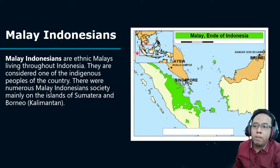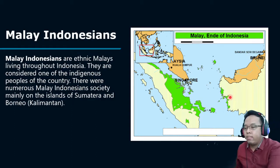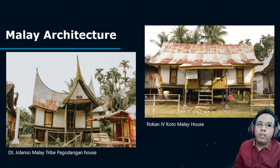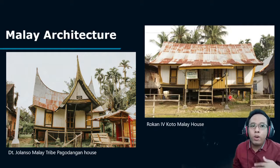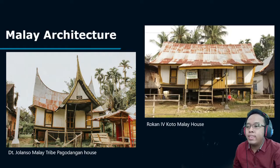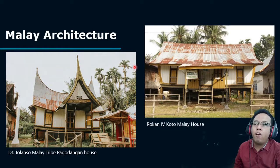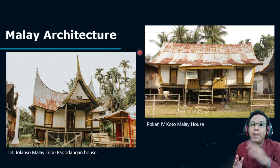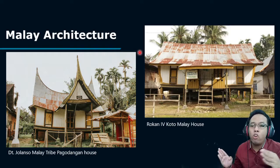This is the Indonesian map, and Sumatra Island is this part, along with a small part of Borneo or Kalimantan Island. Their society has a unique Malay architecture, and one of the examples is the Datuk Jolanjo Malay Tribe Pakodangan House and Rokan Forkoto Malay House. These are examples of Malay architecture, and there are many others.